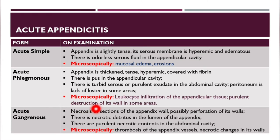In acute gangrenous appendicitis, examination reveals necrosis of sections of the appendix or possible perforation of its walls. There is necrotic detritus in the lumen and purulent necrotic contents in the abdominal cavity. Microscopically, there is thrombosis of appendix vessels and necrotic changes in its walls.